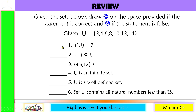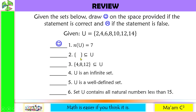Number 1: the cardinality of the universal set is equal to 7. Let us count the number of elements: 1, 2, 3, 4, 5, 6, 7. So this is a happy face. Number 2: empty set is a subset of the universal set. We have learned from our previous lesson that an empty set is a subset of every set, so an empty set is a subset of the universal set. This is a happy face.